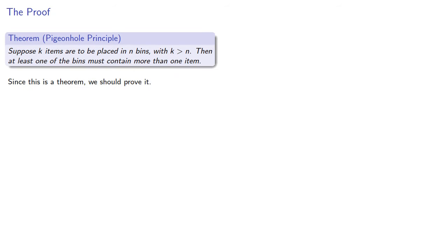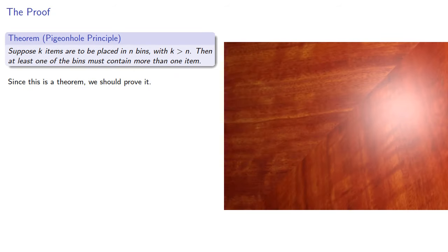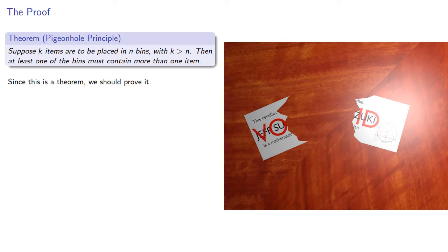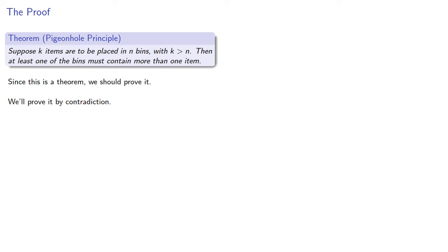Since this is a theorem, we should prove it. And in fact, unless I prove some things, I'll get my mathematician card revoked. So we'll prove it by contradiction. Suppose no bin has more than one item. Since there are n bins, this means we can place at most n items.